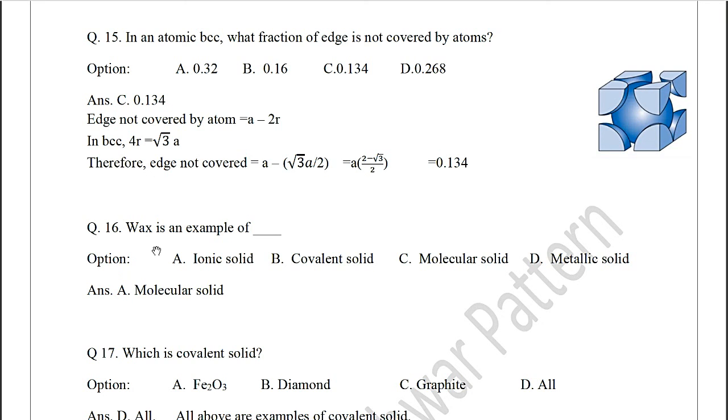Because in wax there is no ionic bond, no covalent bond, or metallic bond. Here the bonding between molecules is due to intermolecular forces like van der Waals forces of attraction. Hence wax is an example of molecular solid. So correct option is C.